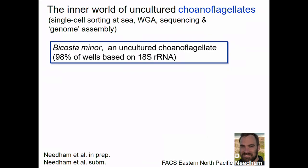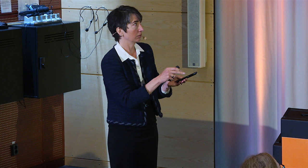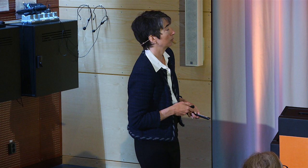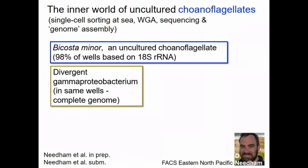Let's go ahead and sequence some of these wells. We're going to look at the inner world of the choanoflagellate, or maybe cells on the outside. This is single-cell sorting at sea, whole genome amplification, sequencing, genome assembly, and then various binning efforts. By Costa Minor, 98% of the wells had one choanoflagellate — 1% were other choanos — and it's an uncultured choanoflagellate, which is pretty neat. We were able to get quite a lot of its genome assembled. And in this same single well, we had a divergent gamma-proteobacterium. From each well, we could recover a complete genome — which implies there was more than one of this bacterium in the well.